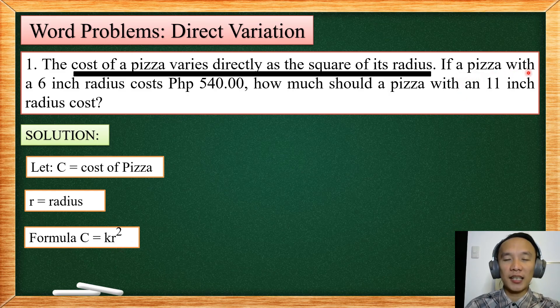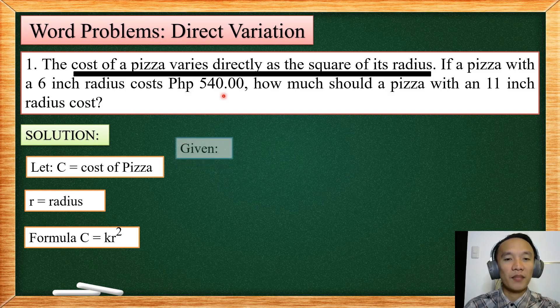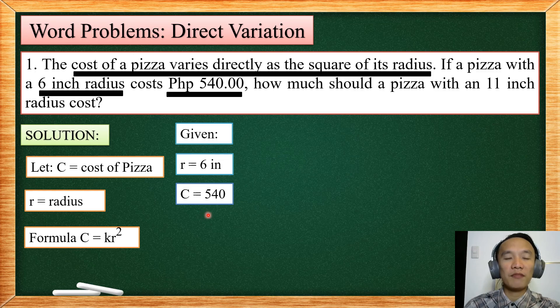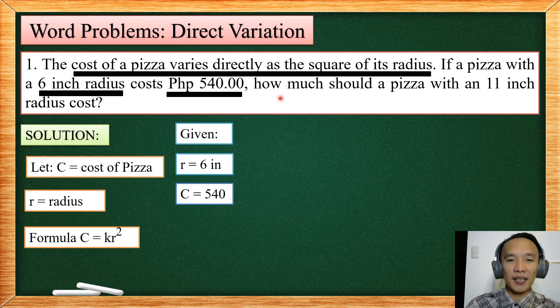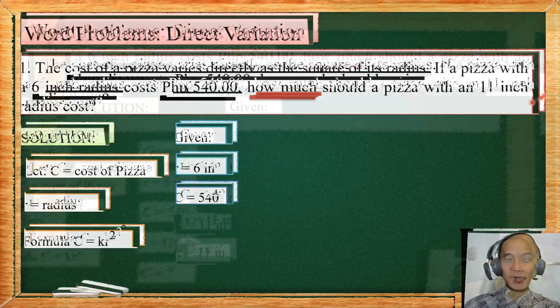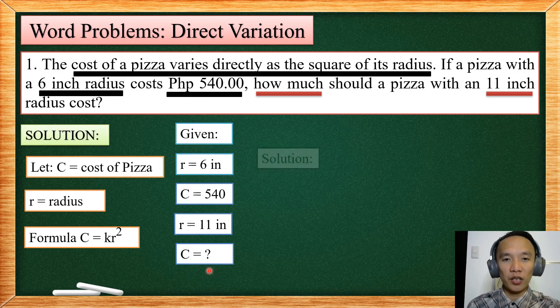Next, it states on the second sentence that a pizza with a 6 inch radius costs 540 pesos. So we will have our given. So let R be 6 inches and C will be 540 pesos. Then the next statement says, how much? So we are asking for the price of the 11 inch radius pizza. So let R be equal to 11 inches and let C will be null. Because that is what we are looking for.